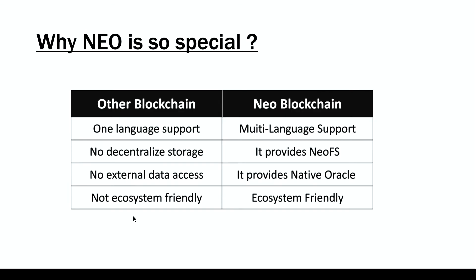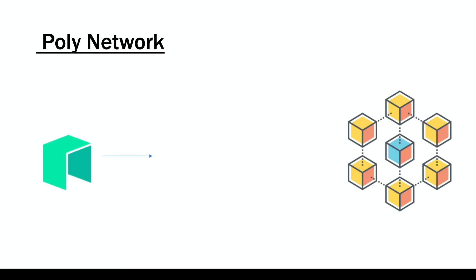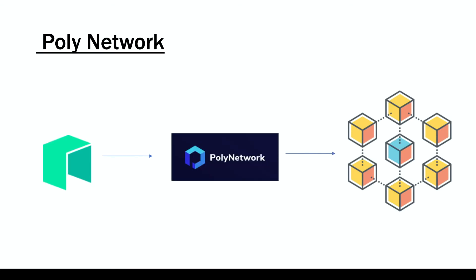The fourth difference is ecosystem friendliness. Connecting two different blockchains requires a lot of effort on other platforms. In the case of NEO, this is very easy — NEO has Poly Network, which actually helps NEO communicate with any other blockchain.